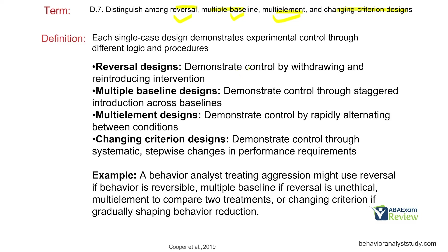Let's look at reversal designs — they demonstrate control by withdrawing and reintroducing intervention. It's your classic ABA design. Multiple baseline designs demonstrate control through staggered introduction across baselines — one participant gets intervention while we remain in baseline for the rest. The other common design associated with multiple baseline is the multiple probe. Multi-element designs demonstrate control by rapidly alternating between conditions. And changing criterion designs may be one of the least used because the behavior already exists and must be sensitive to changing criterion.